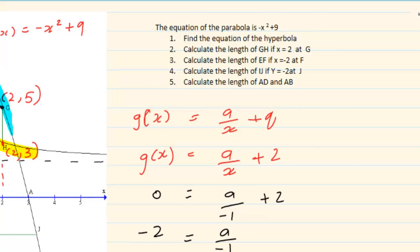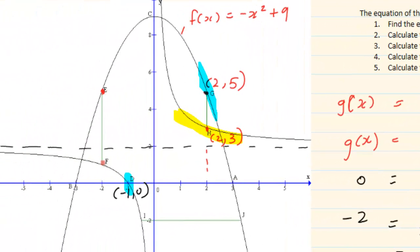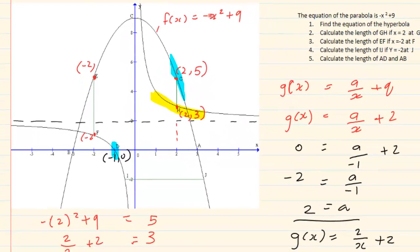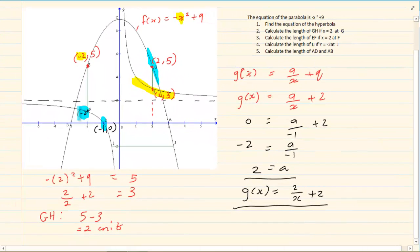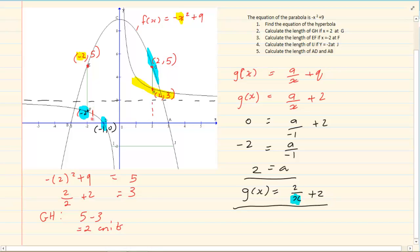Let's do the next one — EF. EF is exactly the same concept. We have that x is minus 2, so in both cases x is minus 2. How do I get y? We are going to substitute minus 2 into the equation. If I substitute minus 2 into my hyperbola, I would get that y is equal to 1. If we were using g of x, we would have g of x is equal to 2 over minus 2 plus 2 which equals 1.